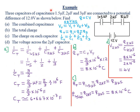Let's look at an example involving series connection of capacitors. We are told that three capacitors of capacitance 1.5 microfarad, 2 microfarad, and 3 microfarad are connected to a potential difference of 12 volts. Find part A, the combined capacitance. The key things to note for any series connection: V total equals V1 plus V2 plus V3; Q total equals Q1 equals Q2 equals Q3; and the reciprocal of the total capacitance equals the sum of the reciprocals of the capacitances.